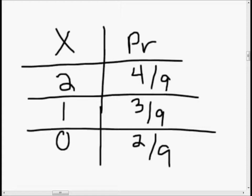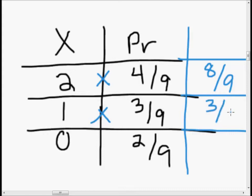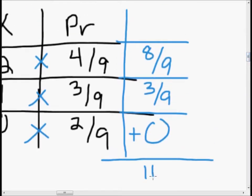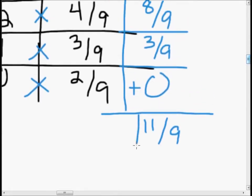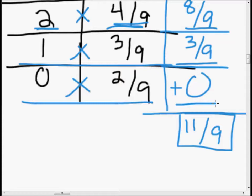Here's where the magic happens. I'm going to extend the chart with one more column — we're going to multiply everything in the x column times its probability. Two times four ninths is eight ninths. One times three ninths is three ninths. And zero times two ninths is zero. Then here's where the real magic happens: we add all of these together. Eight ninths plus three ninths is eleven ninths. And that, believe it or not, is our answer. Just fill out your chart, multiply each x value by its probability, put them in the column on the right, and add them together.